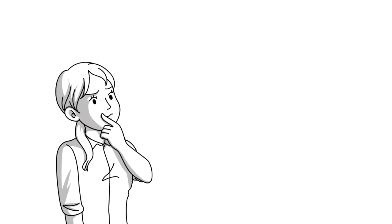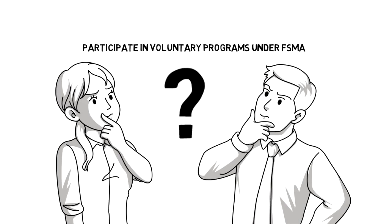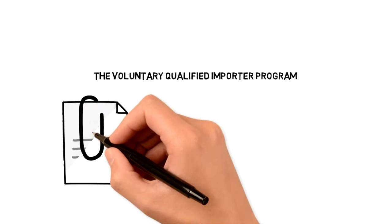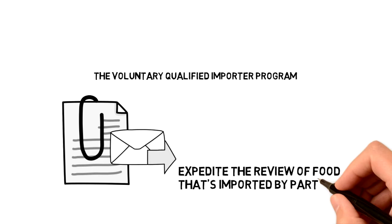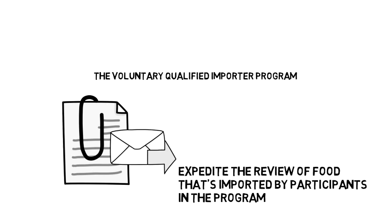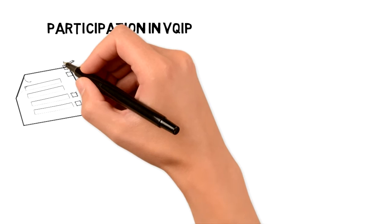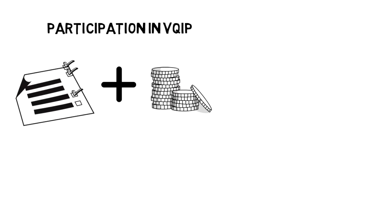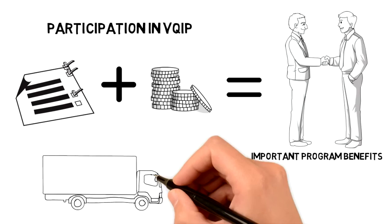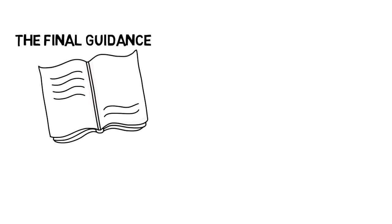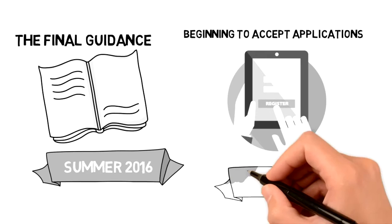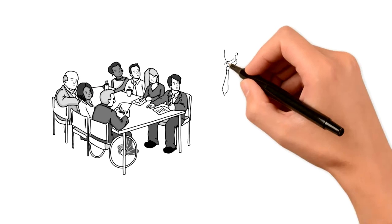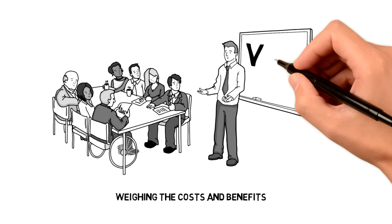And then companies are also trying to figure out whether they should participate in voluntary programs under FSMA and whether that makes sense for their specific situation. For example, FDA is in the process of establishing the Voluntary Qualified Importer Program, or VQIP, to expedite the review of food that's imported by participants in the program. So in order to participate, importers would need to meet pretty significant eligibility criteria, and they would have to pay a user fee. But they stand to gain important benefits from the program in terms of making it much easier for them to import food. So FDA has indicated that it intends to publish the final guidance for the program this summer, and it will accept applications beginning in January 2018.